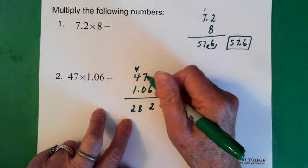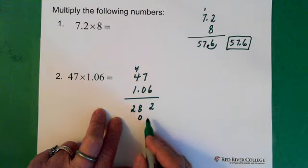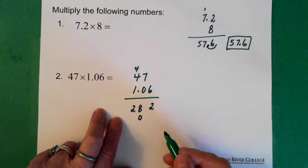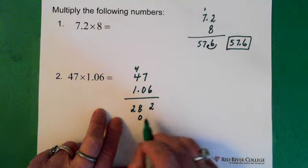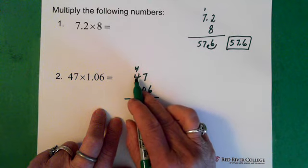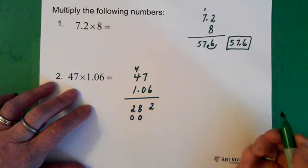0 times 7 is 0 and the 0 goes below the 8. So we're moving 1 step to the left. So the 0 times the 7 goes here. 0 times the 4 gives us 0 and that goes here, right underneath the 2.